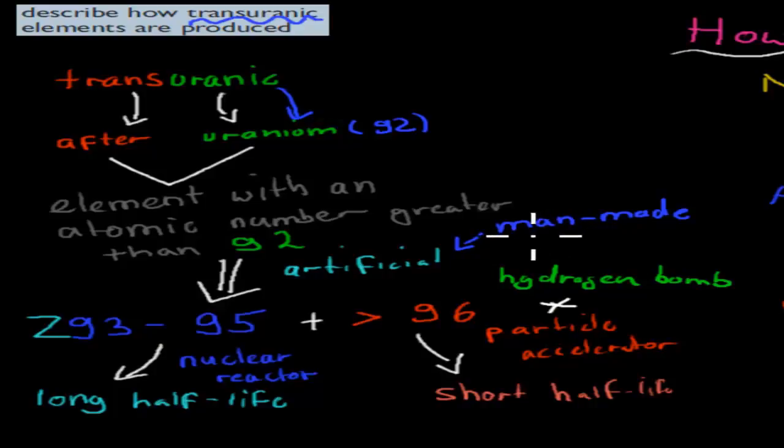And there's a couple of different ways we can make them. We can make them in a nuclear reactor, and that's specifically mostly your transuranic elements with the atomic number of 93 to 95. We can use a nuclear reactor to produce elements such as plutonium and neptunium. And these have a long half-life, so these last for long, generally speaking.